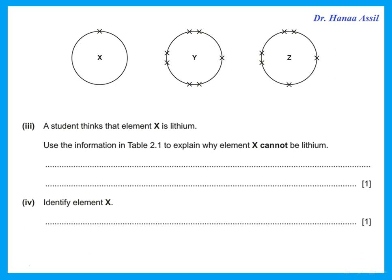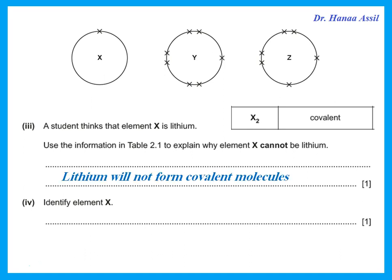A student thinks that element X is lithium. Use the information in table 2-1 to show why element X cannot be lithium. When I look at the table, X2 is covalent. If it were lithium, it would not form covalent bonds with itself — lithium is in group 1, it's a metal, and metals do not form covalent molecules. So it cannot be lithium. Element X has only one electron in its outer shell, so it must be hydrogen.